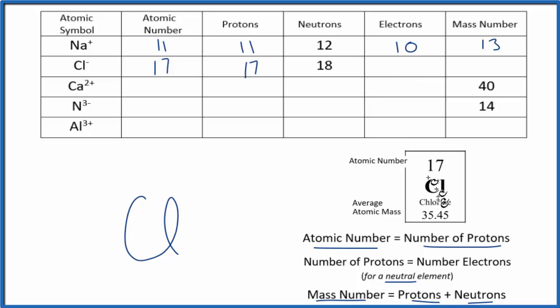Electrons. Well, it would be 17 if it were neutral. But this is the chloride ion. It has a 1 minus charge. Think of it this way. Electrons are negative. So we see that negative sign. That means we have one more electron. So instead of 17, we put 18.